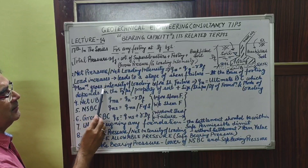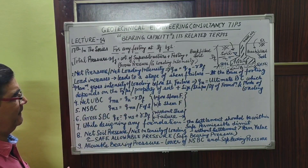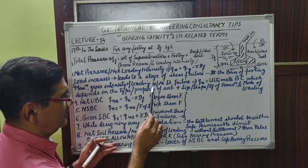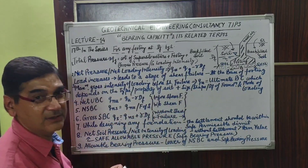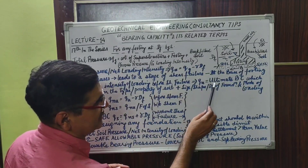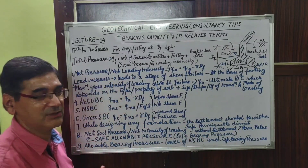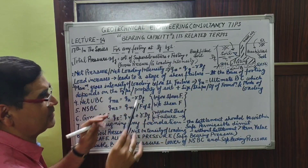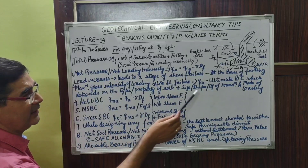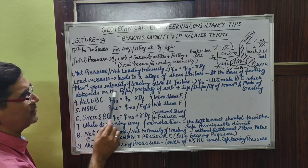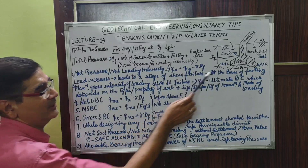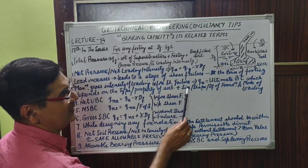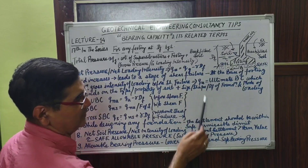What is the maximum gross intensity of loading before shear failure occurs? This is defined as the ultimate bearing capacity — the point at which the foundation is at the verge of shear failure. It depends on the type and properties of the existing soil beneath the founding level, as well as the size, shape, and depth of the foundation.